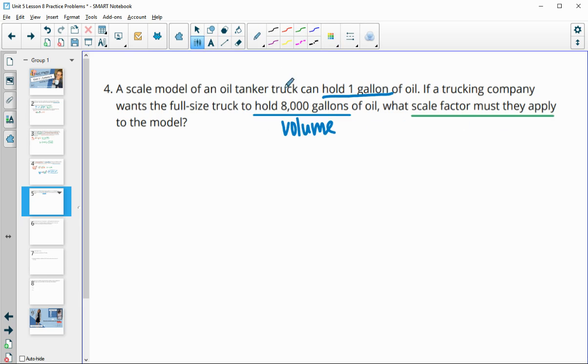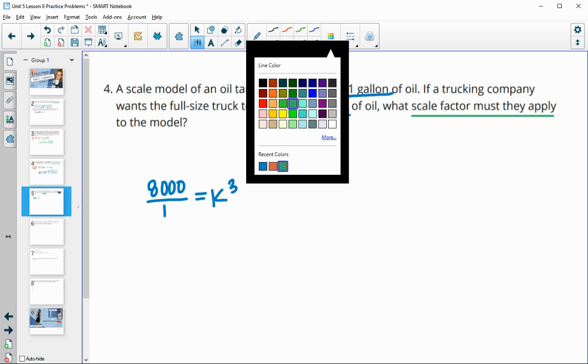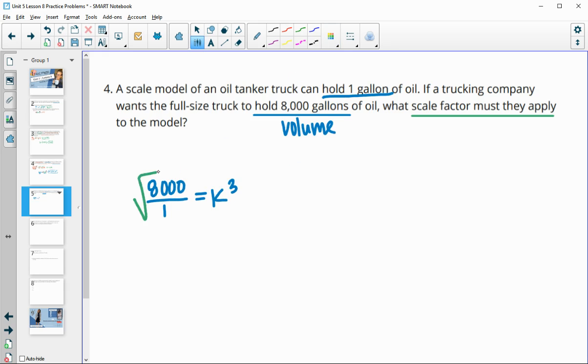We'll compare our volumes. Our new volume is 8,000 divided by our original volume, and that's going to be our k cubed. To get our dilation amount, we will cube root each of these. The cube root of 8,000 is 20. So our scale factor needs to be 20 times bigger.